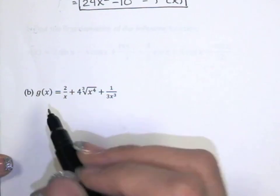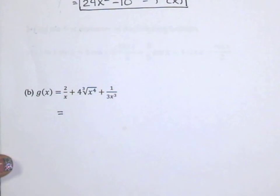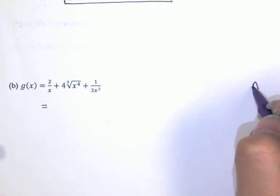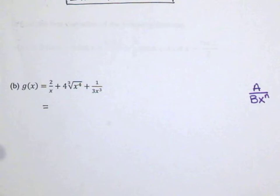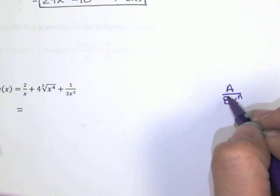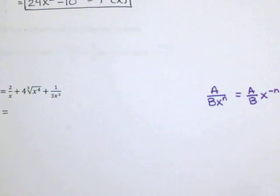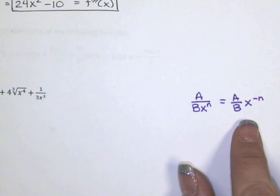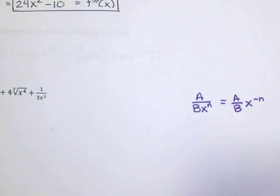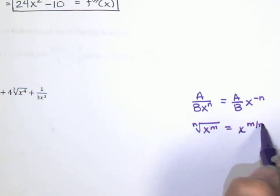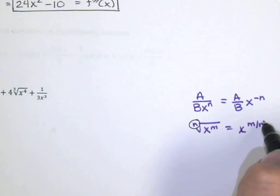If you're rewriting, just write equals — you're not computing g' yet. We're going to use some exponent properties. If you have a constant over a constant times x to the n, you can pull out that ratio of constants, and when you bring x to the n up to the numerator, it becomes x to the negative n. Also remember that the nth root of x to the m is x to the m over n — the index of the root goes in the denominator.